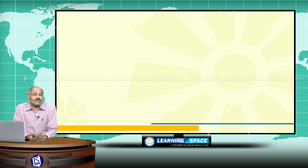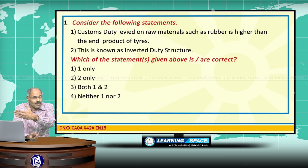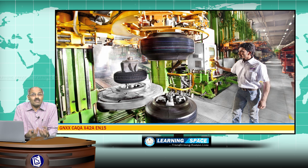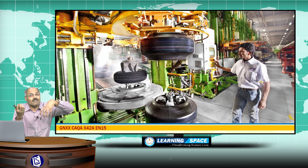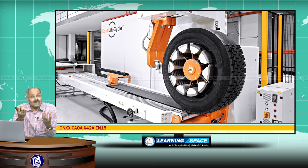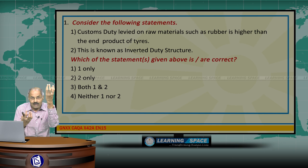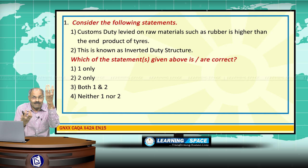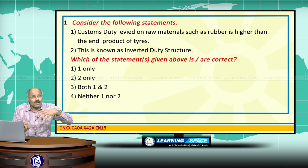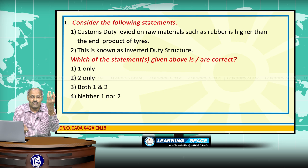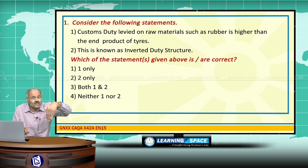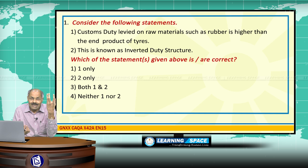Look at the first sentence: 'Customs duty levied on raw materials such as rubber is higher than the end product of tires.' Sometimes in India, the customs duty levied on rubber — that is the raw material — is higher than the customs duty levied on tires. Customs duties are the duties imposed on imports; when the government imposes duty on imports, that is customs duty. So customs duties on raw materials are sometimes higher than on finished goods.